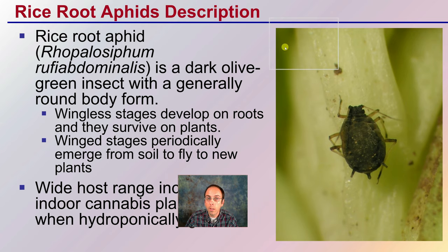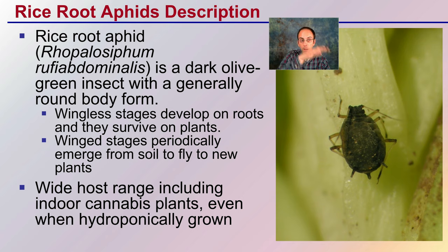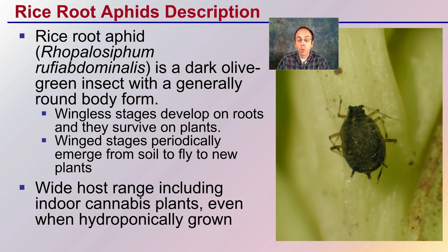The rice root aphid is what's going to be focused on. This is a dark green insect with a generally round body form. Wingless stages develop on roots and survive on plants, while winged stages periodically emerge from the soil and fly to new plants — that's how they spread. They have a wide host range, including indoor cannabis plants, even when grown hydroponically. Even hydroponic growers should be mindful of this threat.